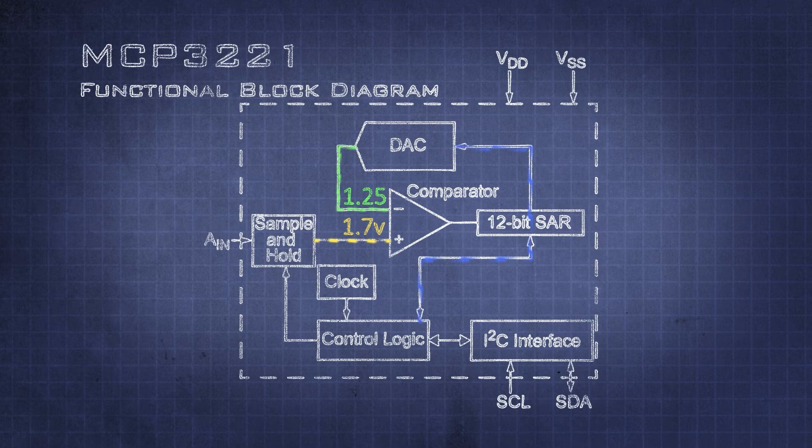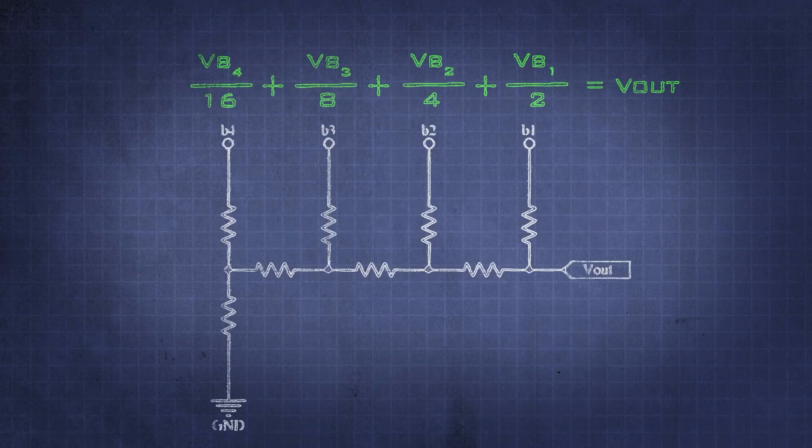If our system is 5 volts, then when this bit is set, there is 1.25 volts added to the DAC. Each bit is then half the contribution of the previous bit.